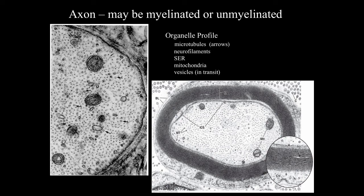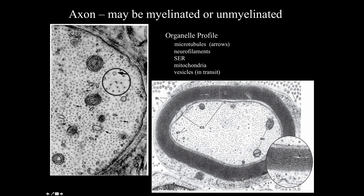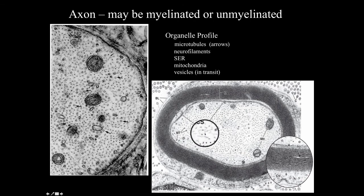Axons can be myelinated or unmyelinated, as shown in these electron micrographs. The organelle profile of axons includes many microtubules highlighted by arrows, neurofilaments as smaller profiles, smooth ER which is a little difficult to pick up, mitochondria, and vesicles in transport. On the myelinated axon you can again see the microtubules, microfilaments, and mitochondria, and we'll discuss the myelin sheath in more detail later.